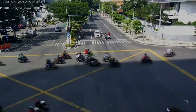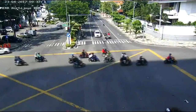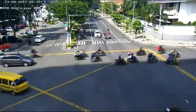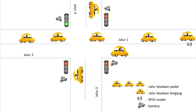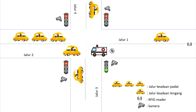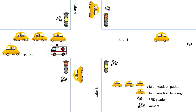Cara kerja alat ini ada dua. Yang pertama, pada persimpangan yang lengkap: ketika ambulan lewat dan RFID mendeteksi adanya ambulan, maka RFID akan memberikan input pada Raspberry Pi. Kemudian kamera mendeteksi kepadatan dan memberikan input, sehingga memunculkan output waktu yang diberikan pada lampu hijau selama 15 detik.